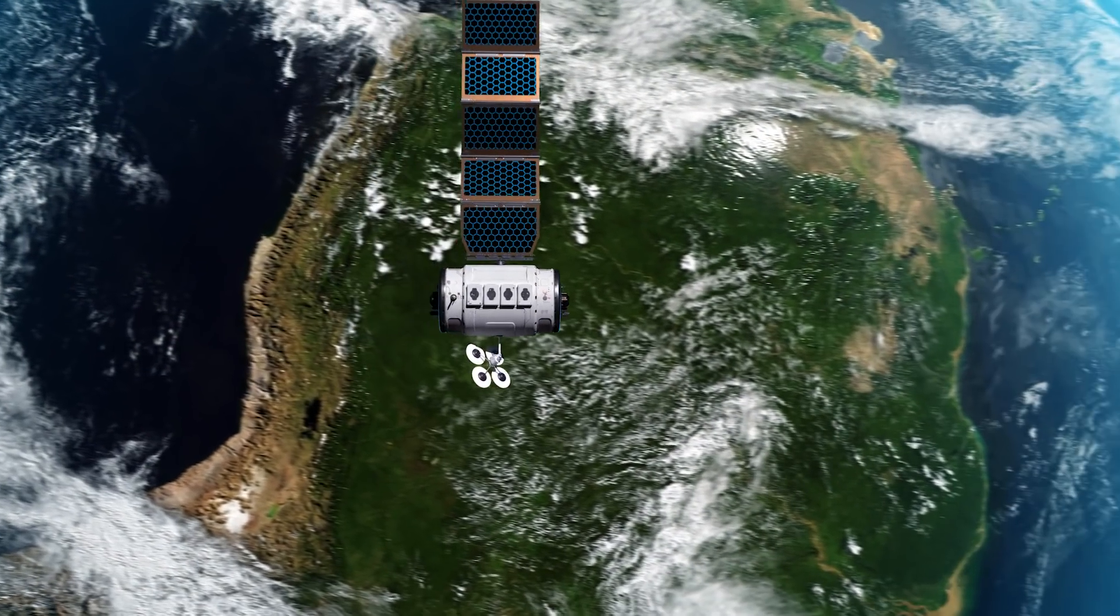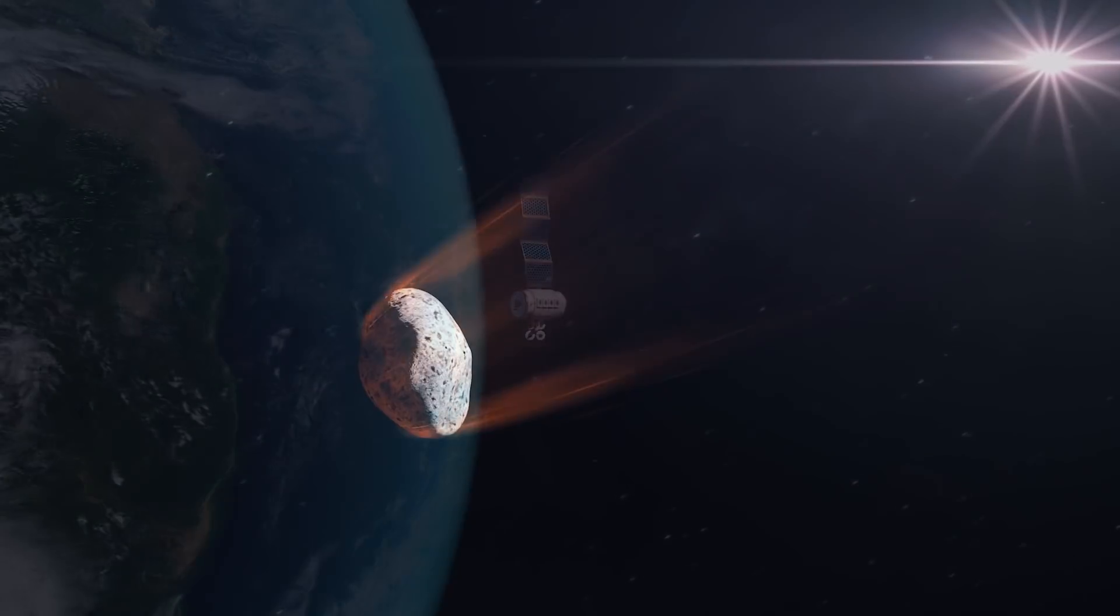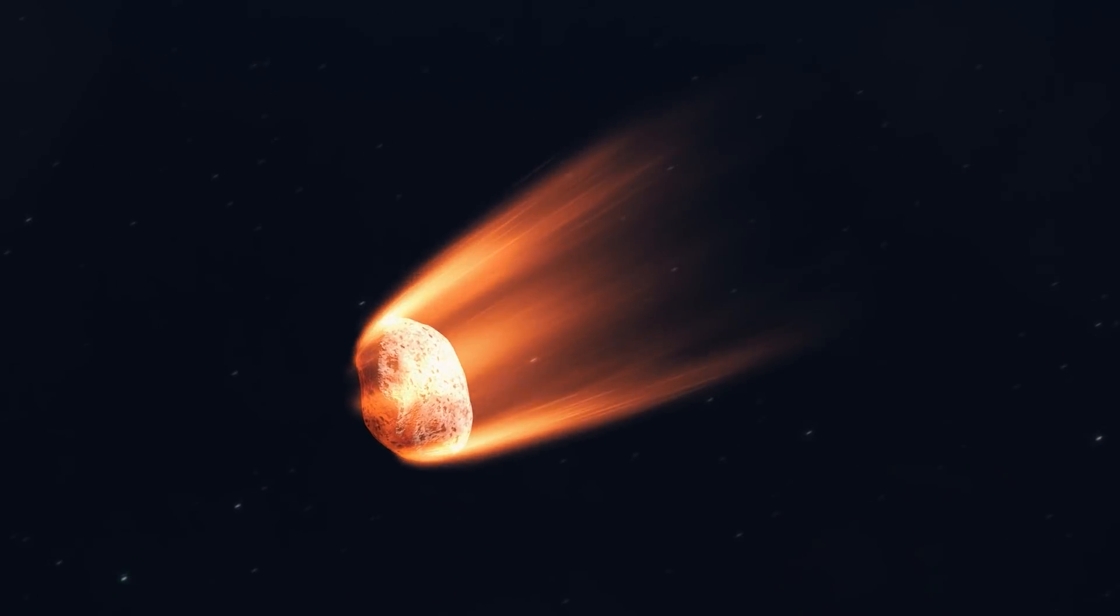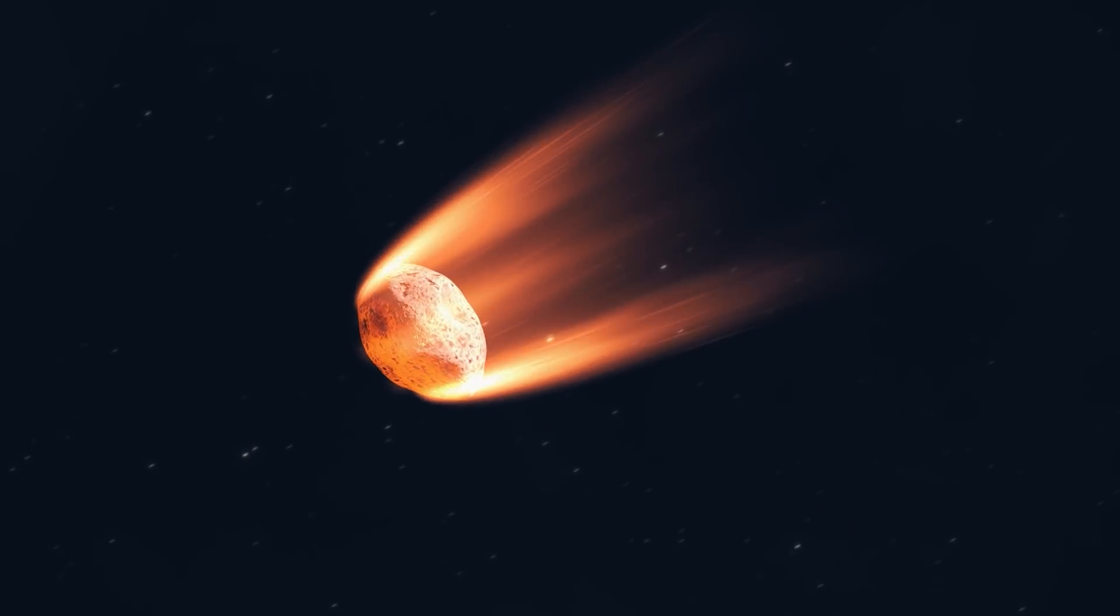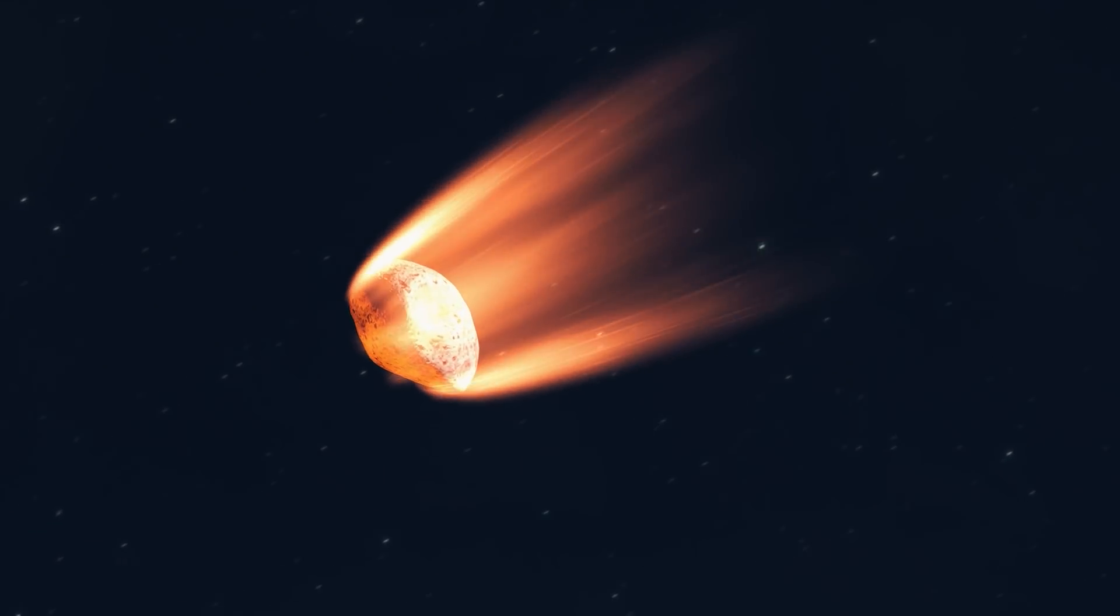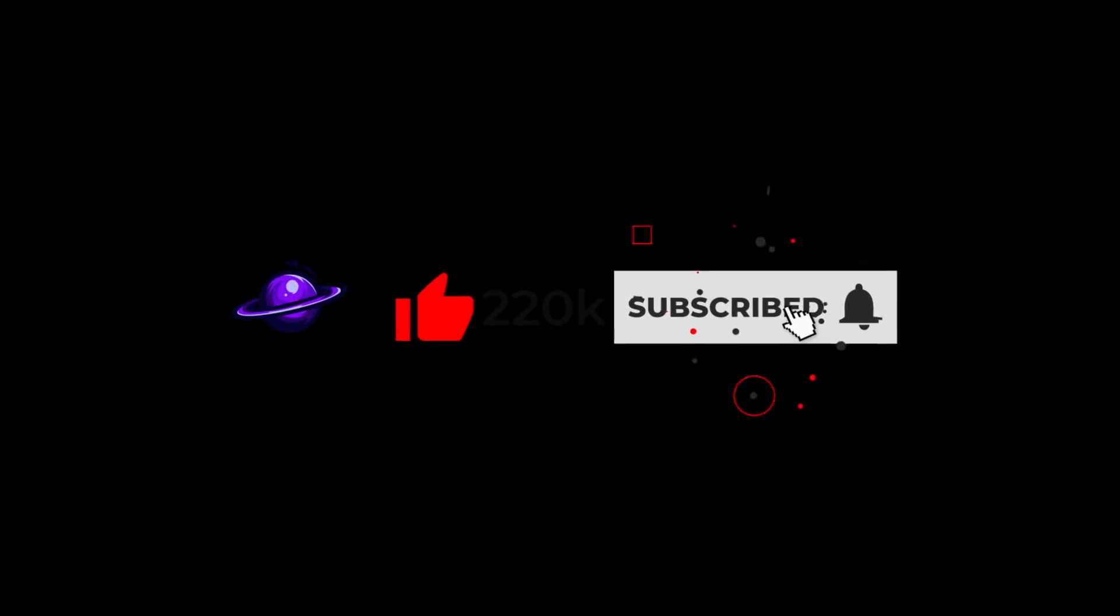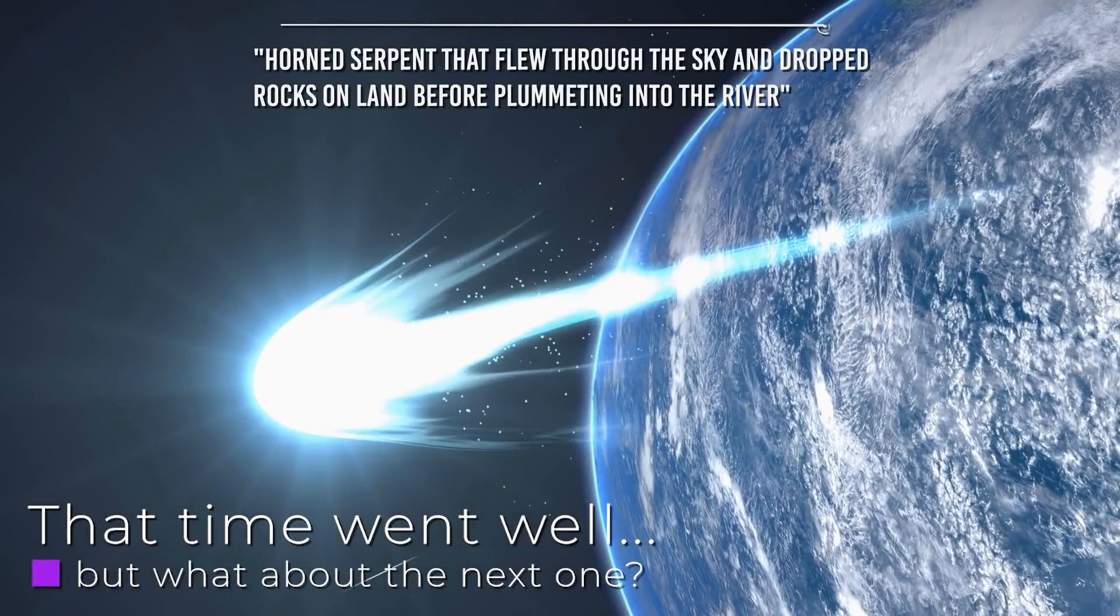However, as SpaceX itself hastens to clarify, the debris is not a danger to the Earth. The Starlings were designed precisely to reduce into small pieces once in contact with the lower layers of the atmosphere. According to the statement, in fact, no part of the satellites that will return will hit the ground. Hang on a sec, guys, before we continue... Be sure to join the Insane Curiosity Channel! Click on the bell, you will help us to make products of even higher quality! That time went well, but what about the next one?